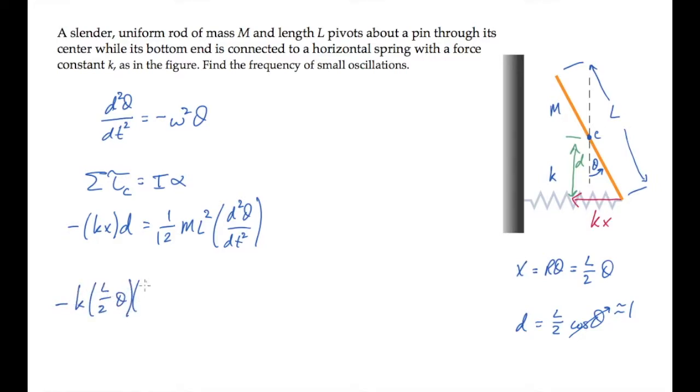Substituting those expressions into the left-hand side and simplifying, we notice that the length of the rod cancels, and we find this result. The second time derivative of theta equals minus 3k over m times theta.